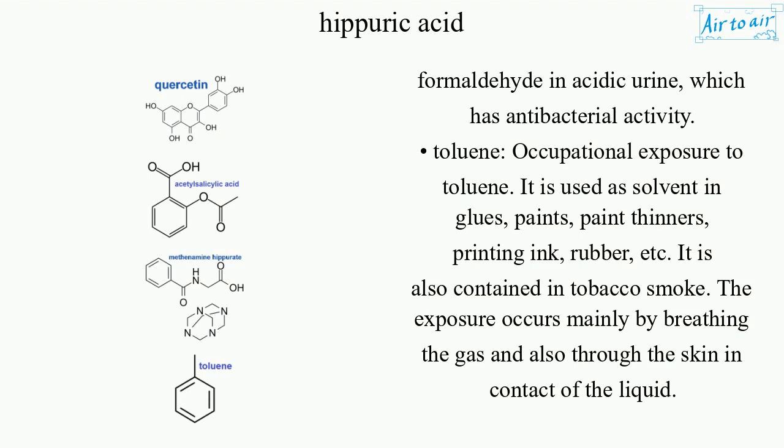Toluene: occupational exposure to toluene. It is used as a solvent in glues, paints, paint thinners, printing ink, rubber, etc. It is also contained in tobacco smoke. The exposure occurs mainly by breathing the gas and also through the skin in contact with the liquid.